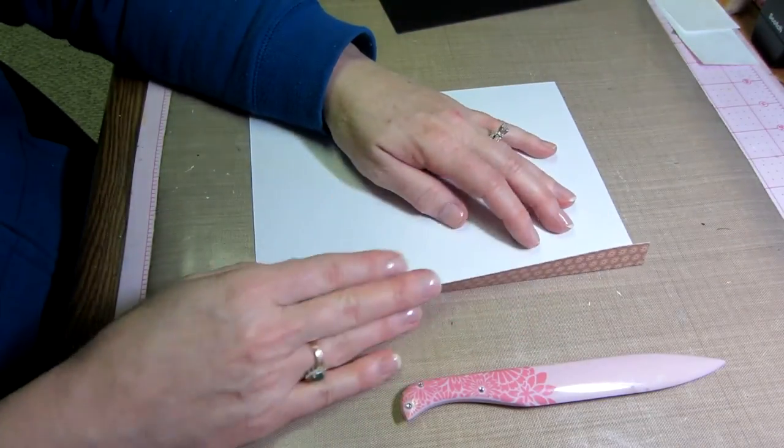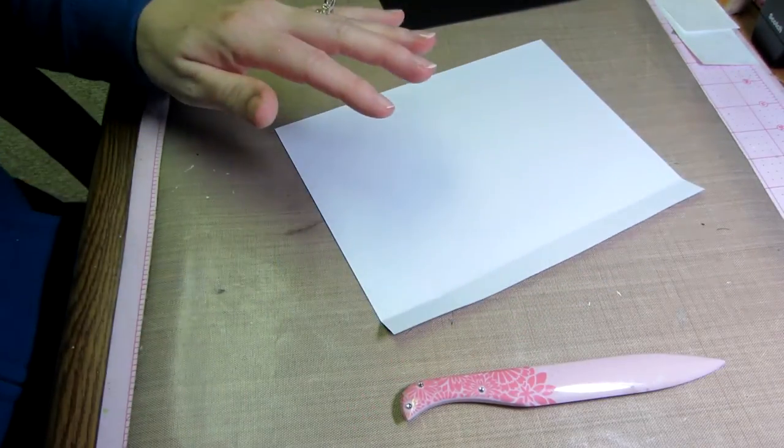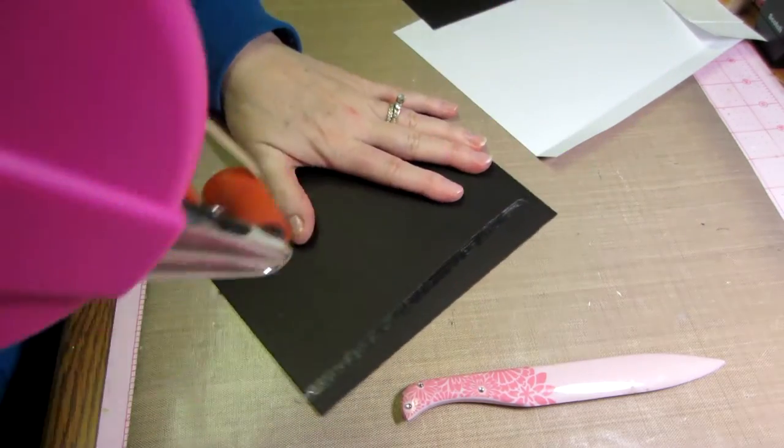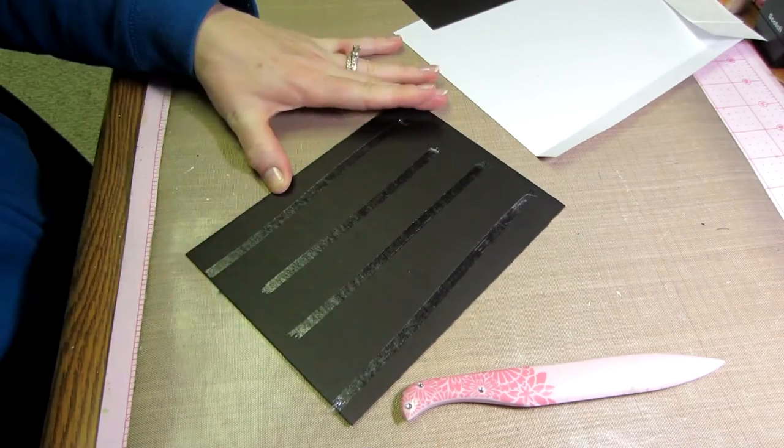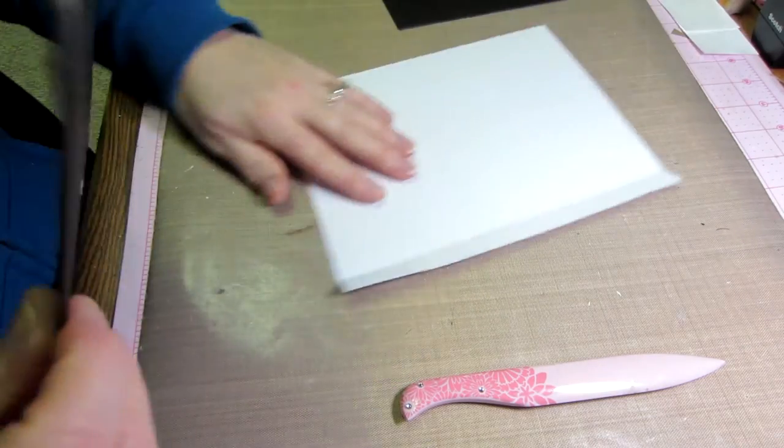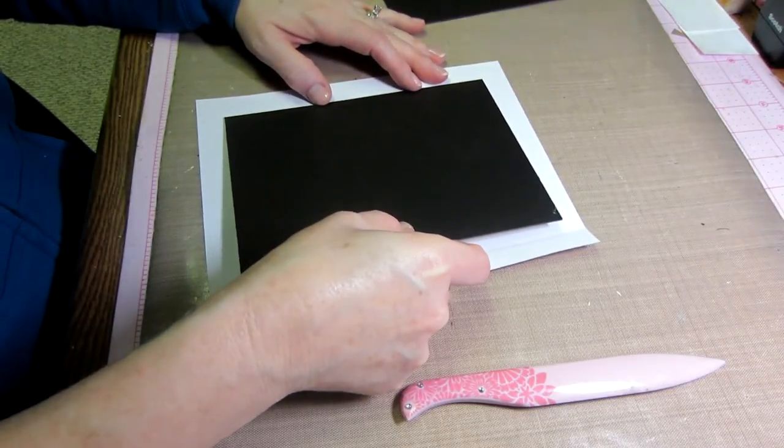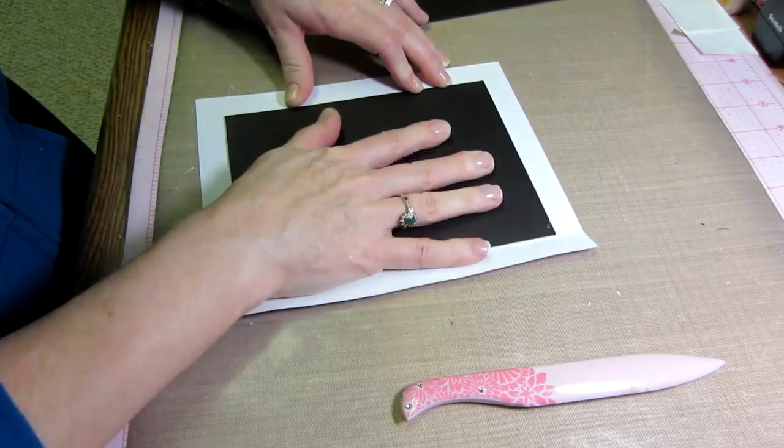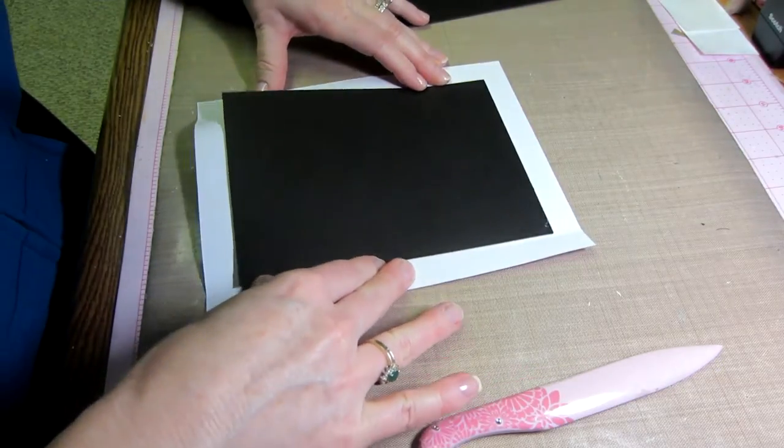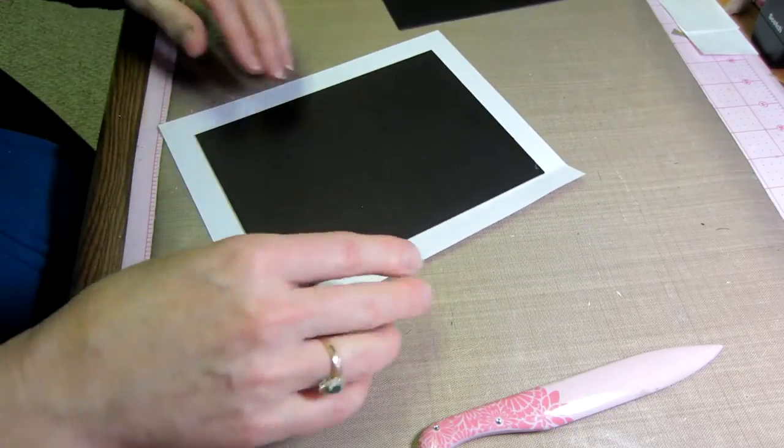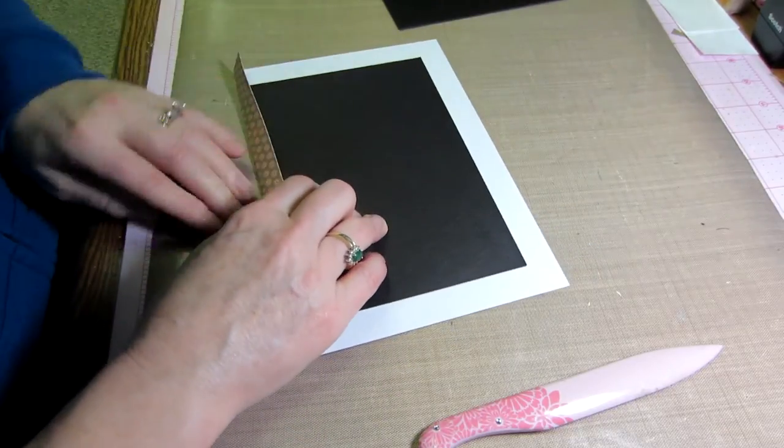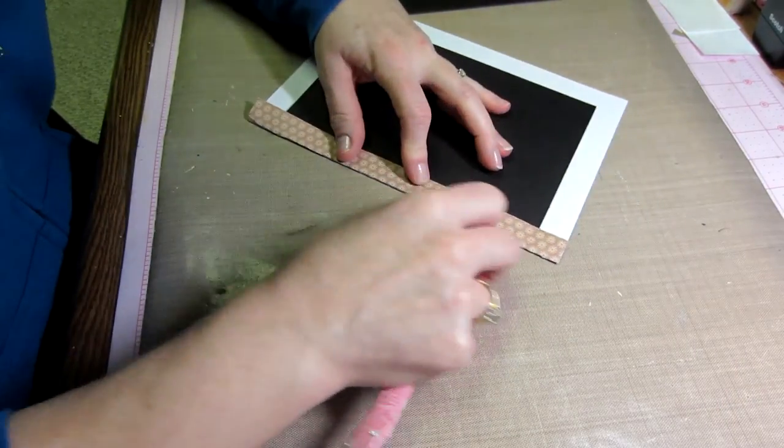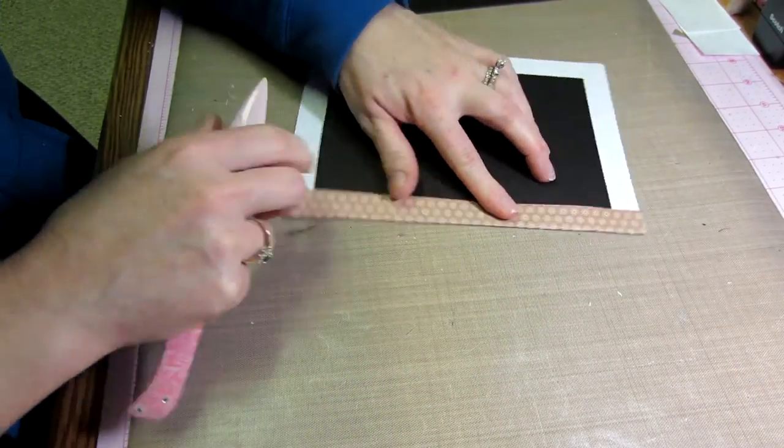You can score it if you want to, if you feel like that's going to be helpful. I'm pretty good at eyeballing, so I will just set this down in the middle and eyeball it. I don't need to score it. And then when I do fold it up, I just make sure to do it really, I score over it with my bone folder and stuff.